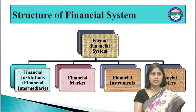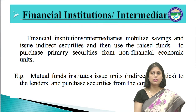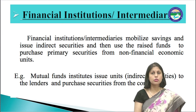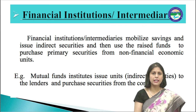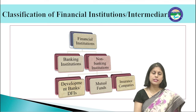The formal financial system has four components: financial institutions, financial markets, financial assets, and financial services. Financial institutions or intermediaries mobilize savings, collect savings from others, issue indirect securities, and then use the funds raised to purchase primary securities from non-financial economic units. For example, mutual fund institutions issue units (indirect securities) to lenders and use the raised funds to purchase primary securities directly from companies. Financial institutions can be classified into banking institutions and non-banking institutions.